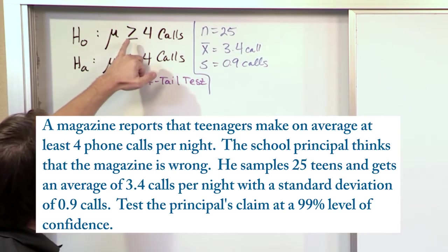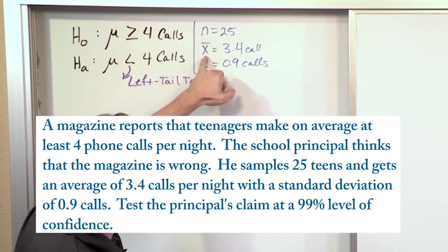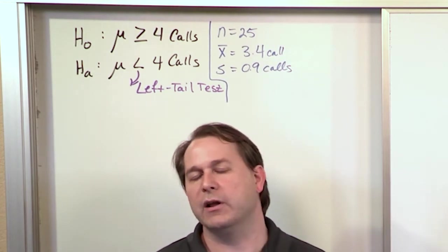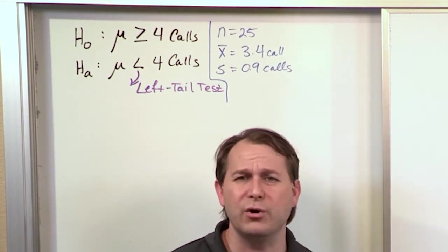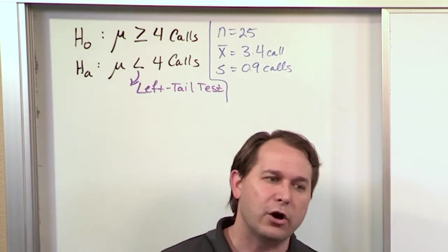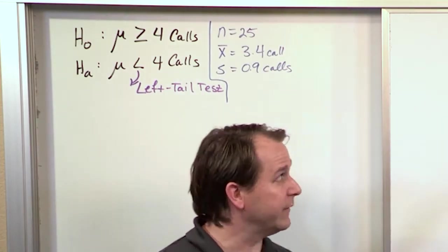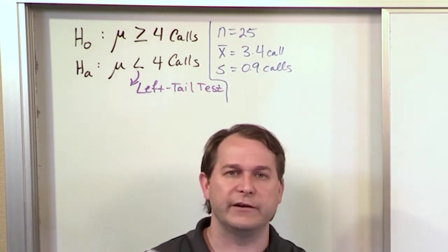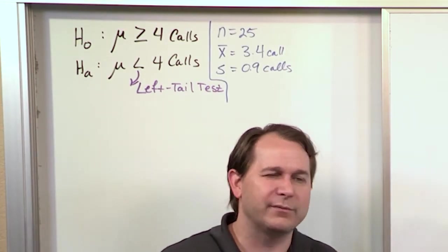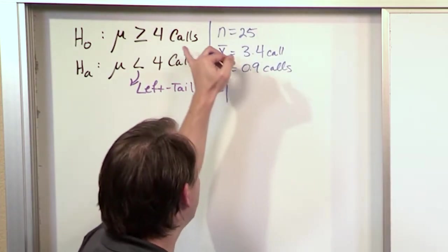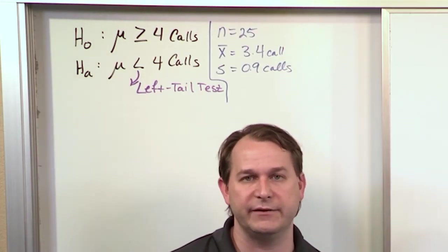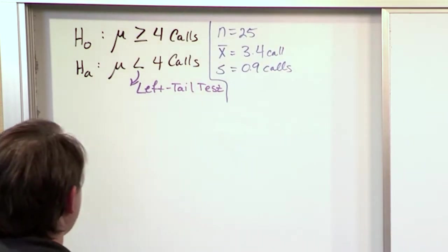The null hypothesis says greater than or equal to four calls, and the sample data tells us 3.4 calls. Casually you might say the null hypothesis must be rejected, but you don't know — you have to take into account the sample standard deviation, how many people you asked, and how far the sample mean is from four. Having one or two decimal places different is not enough to be statistically significant; it has to be far enough away with enough samples and a tight enough standard deviation.